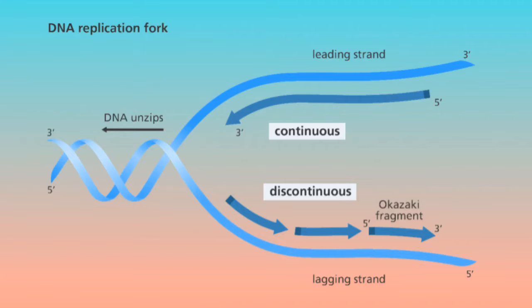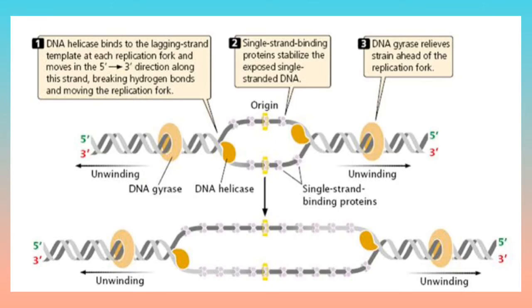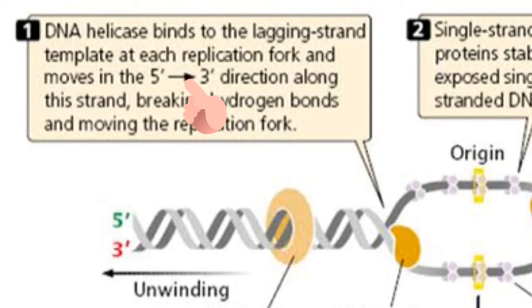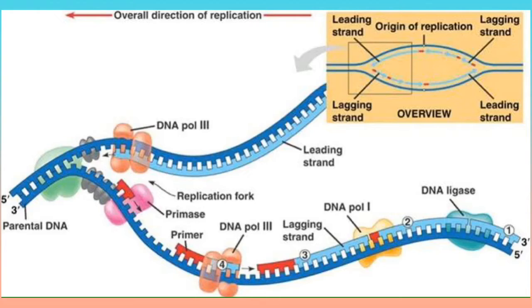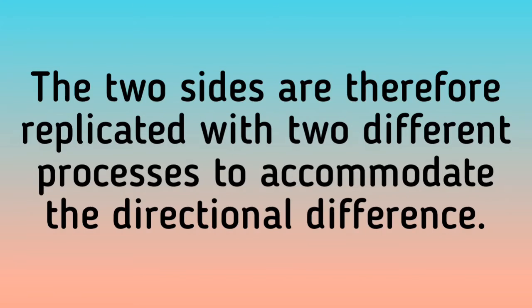This area will be the template for replication to begin. DNA is directional in both strands, signified by a 5' and 3' end. This notation signifies which side group is attached to the DNA backbone. The 5' end has a phosphate group attached, while the 3' end has a hydroxyl group attached. This directionality is important for replication as it only progresses in the 5' to 3' direction. However, the replication fork is bidirectional. One strand is oriented in the 3' to 5' direction, called the leading strand, while the other is oriented 5' to 3', called the lagging strand. The two sides are therefore replicated with two different processes to accommodate the directional difference.